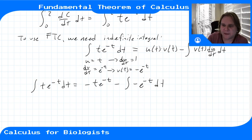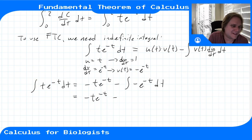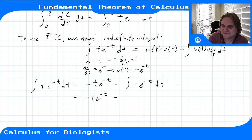That simplifies to −t e^(−t) plus the integral of e^(−t) dt. We do another substitution to evaluate this remaining integral.